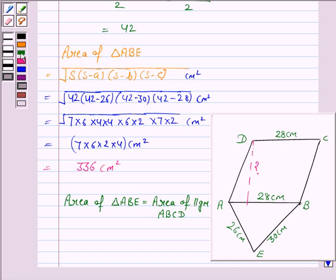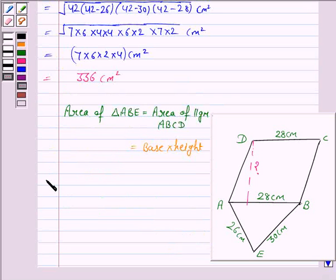Now area of the parallelogram is given by the formula base times height. This implies area of triangle ABE, which is 336 centimetre square, equals the base of the parallelogram which is 28 centimetres times the height.